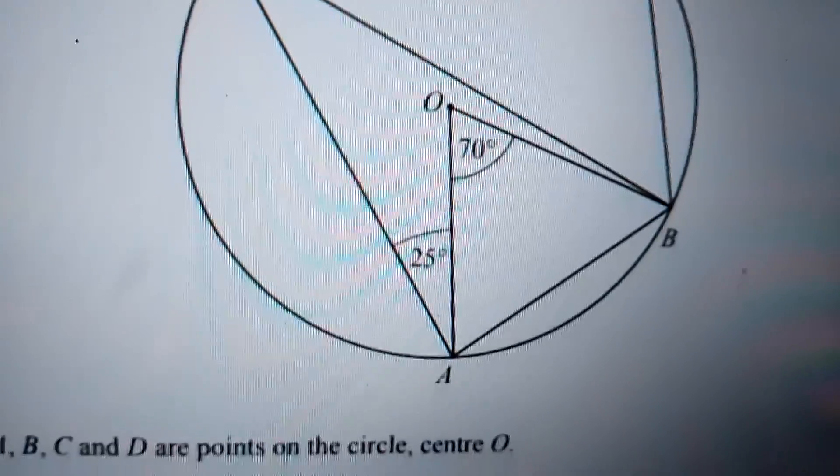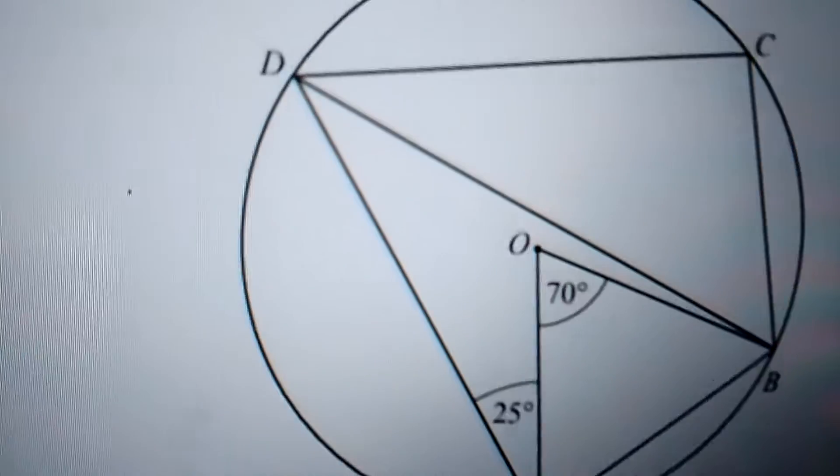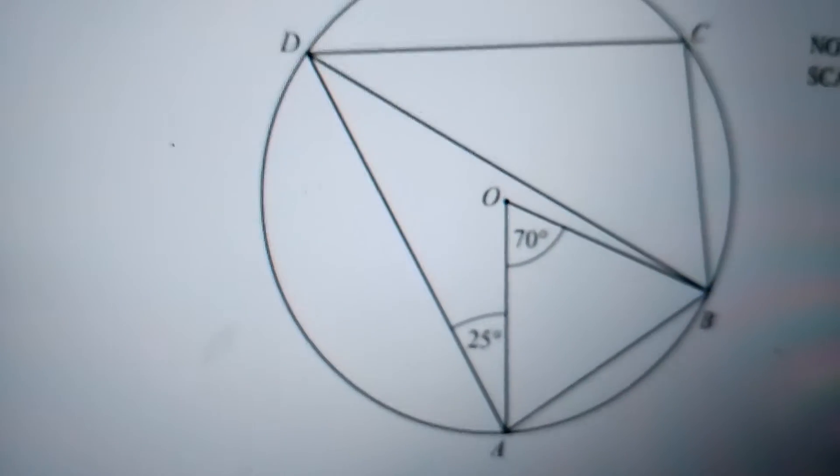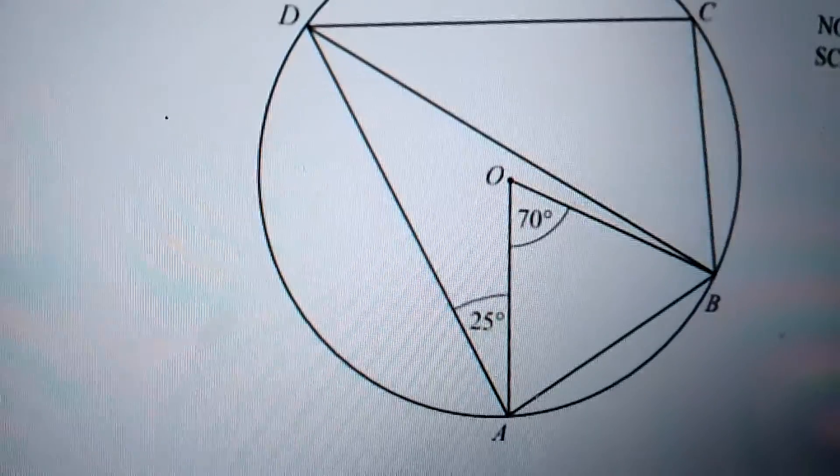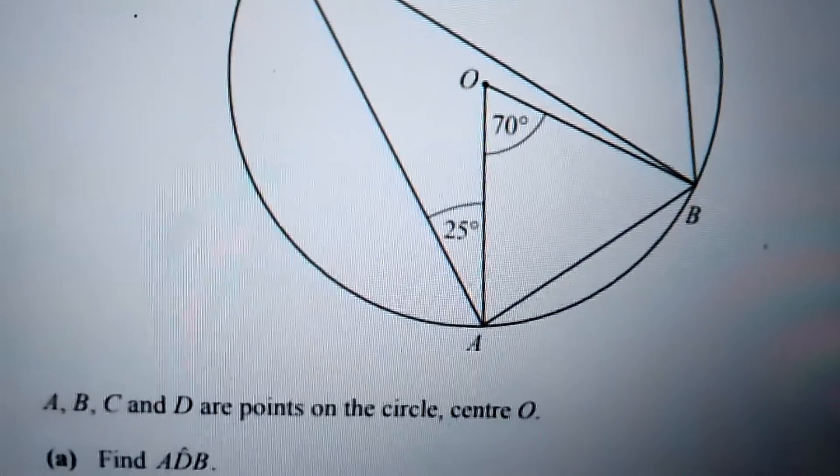Now just have a look at the first angle, that is ADB. ADB, if you just see over here, is the angle at the circumference, at the outline. And AOB is the angle which is given, which is the angle at the center.